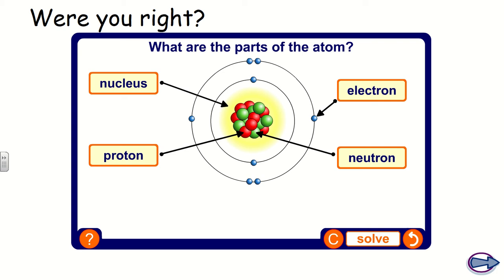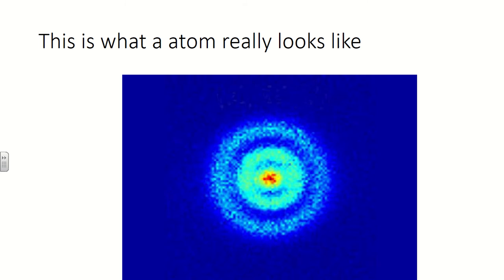Here's an image of an atom — I think it's a copper atom but I'm happy to be corrected. It's not really a photograph; it's a composite of information gathered from something like an electron microscope. You can't see the individual electrons orbiting in their shells, but you can make out a nucleus in yellow right in the centre. It looks a lot more complicated than what you've just drawn.